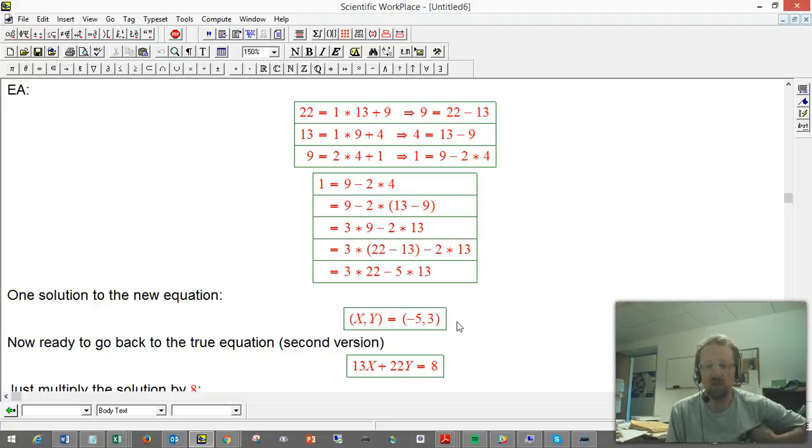So, that's a big deal, that's the core of the whole thing, and the rest of it is building up to the full thing we want. So the first thing to do is to go back and say, well, we really did want this equation, thirteen x plus twenty-two y equals eight, with not a one on the right hand side but the eight, but we know how to fix that.